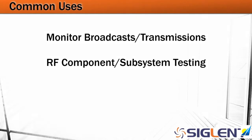Another application area would be RF component and subsystem testing. This could include antennas, cables, amplifiers, filters — any number of RF components or subsystems. We want to make sure that they're operating over the correct frequency range and delivering the amplitude that we expect without any interference or other problems in that particular output.